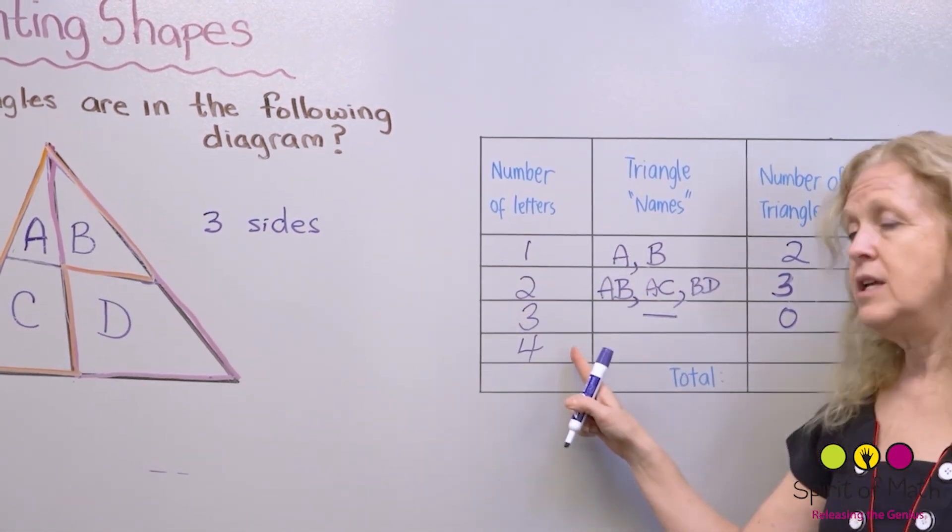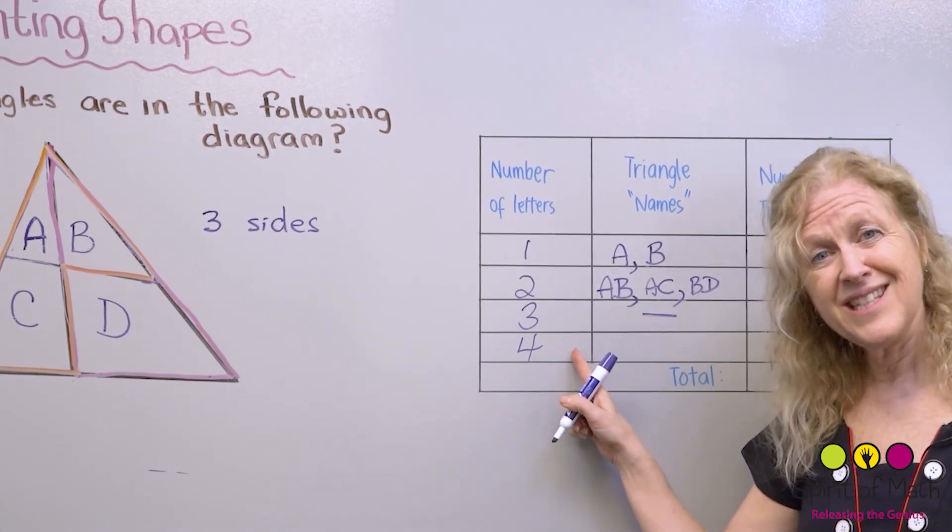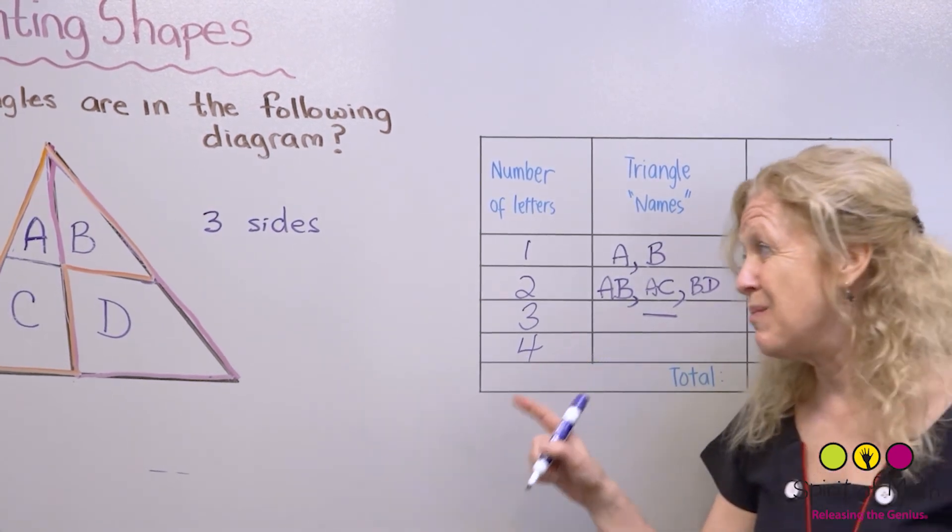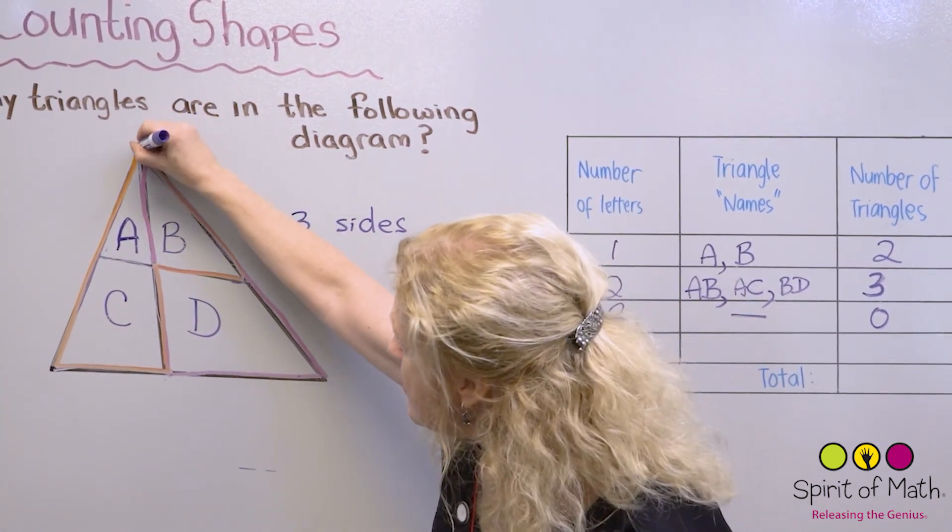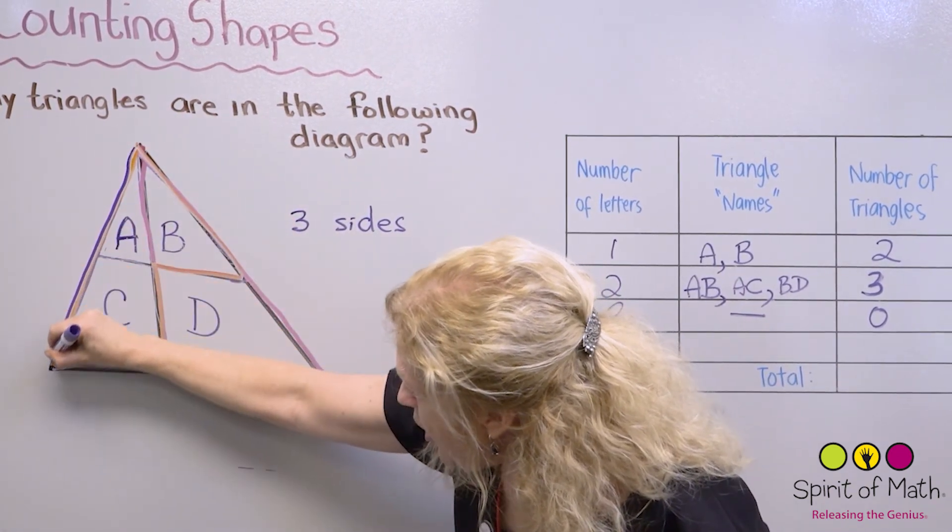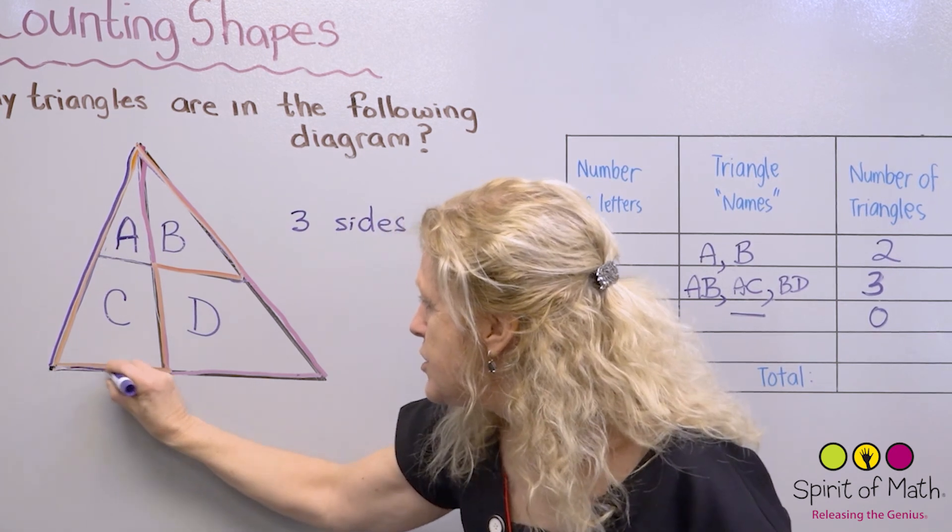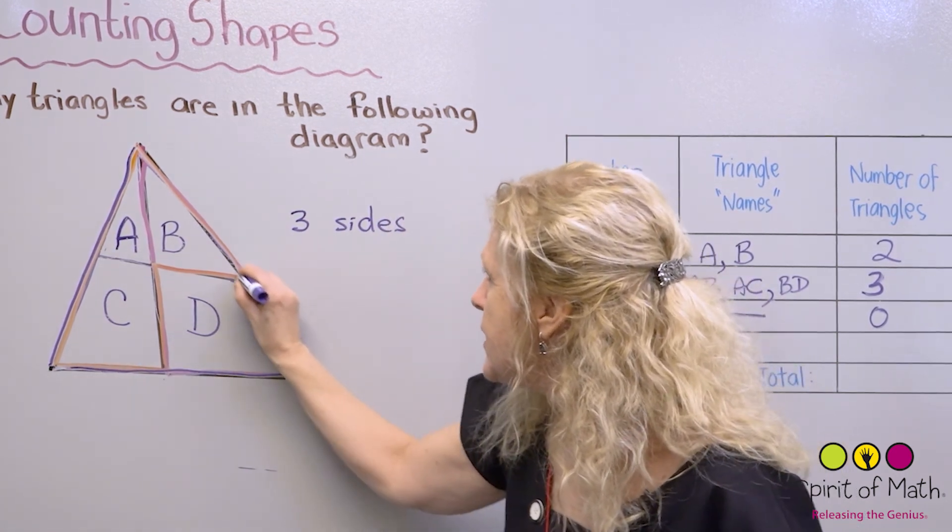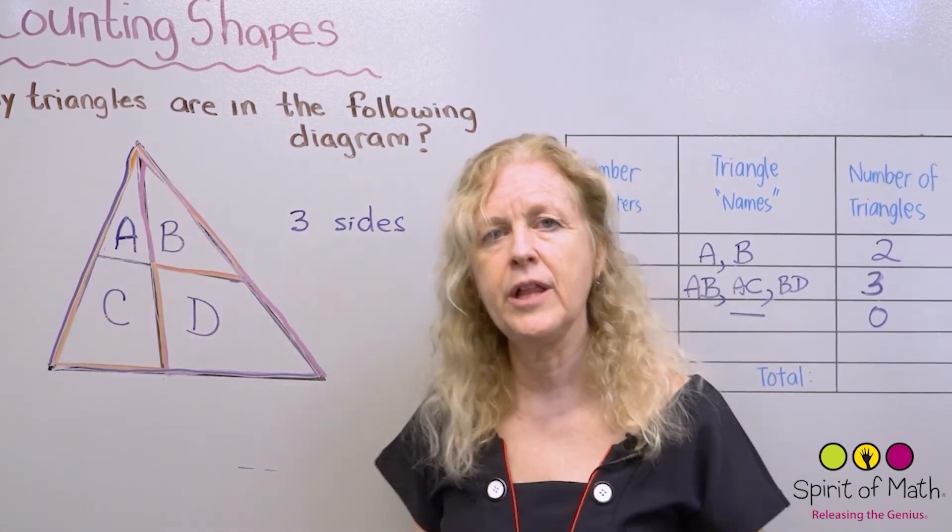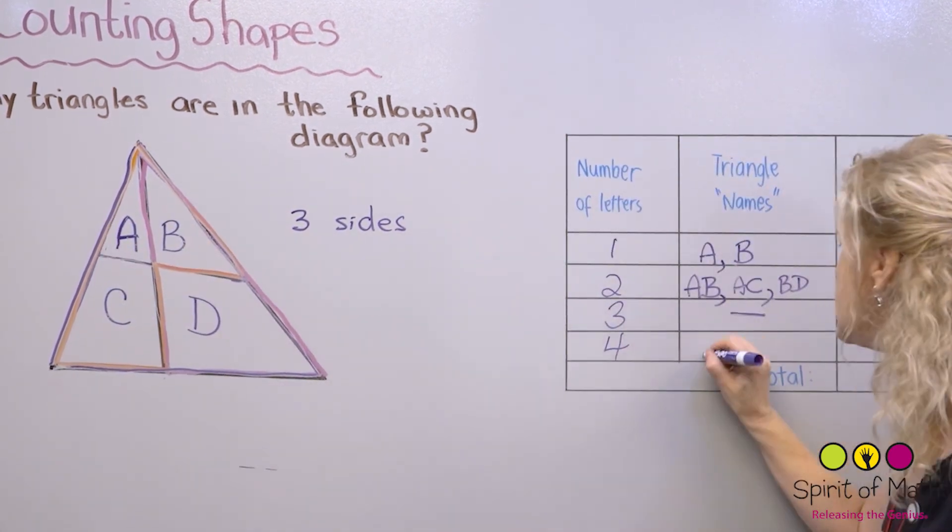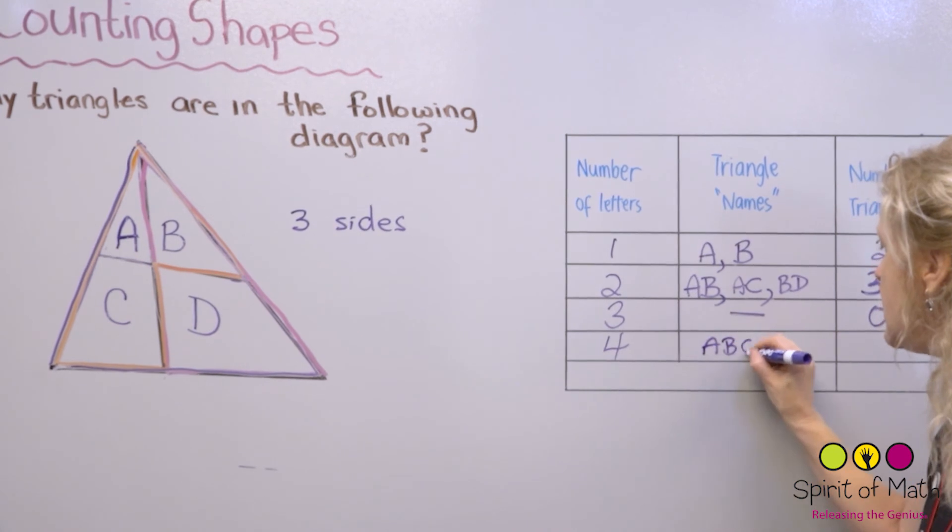And are there any, is there a triangle that has four letters? Yes, there is. Remember, right to begin with. Let's just draw that big triangle again. So you've got one, two, three, all around the outside. And that gives you the triangle A, B, C, D. So let's write that down. A, B, C, D. And there's only one.